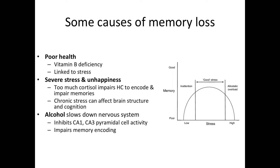Before we end this chapter, let's go over some other causes of memory loss. Poor health can also result in memory loss and is often linked to stress. Specifically, vitamin B deficiency symptoms include depression, confusion, dementia, and poor memory, so always make sure you eat enough vitamin B. Severe stress and unhappiness can also cause memory impairments — excess of the hormone cortisol can impair the ability of the hippocampus to both encode and recall memories, as stress hormones hinder the hippocampus from receiving enough energy by diverting glucose levels to surrounding muscles. Chronic stress can also affect brain structure and eventually cognition.